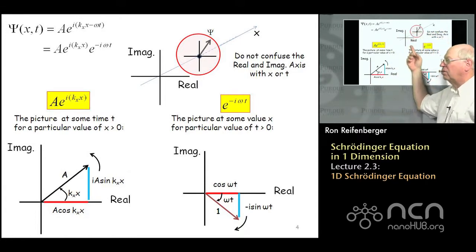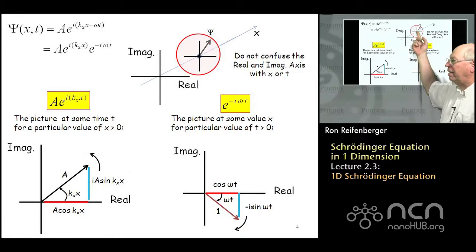Rather, x or t is a third axis that's perpendicular to the real imaginary plane. So I try to illustrate that qualitatively here, where this blue line represents the x-axis. And at any point along this x-axis, you can draw a real and an imaginary axis, and you can plot this wave function psi.